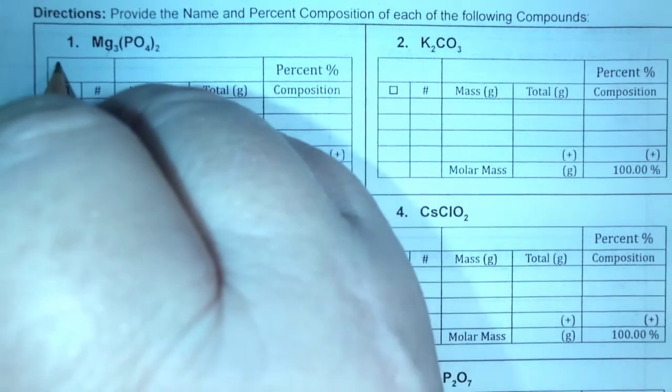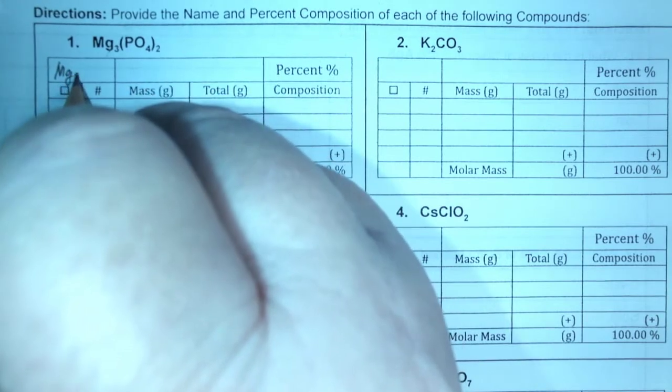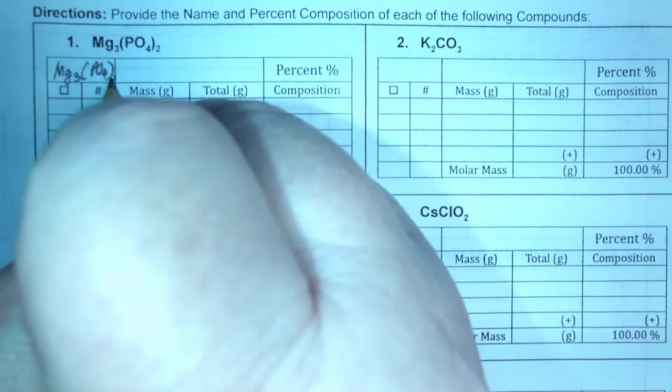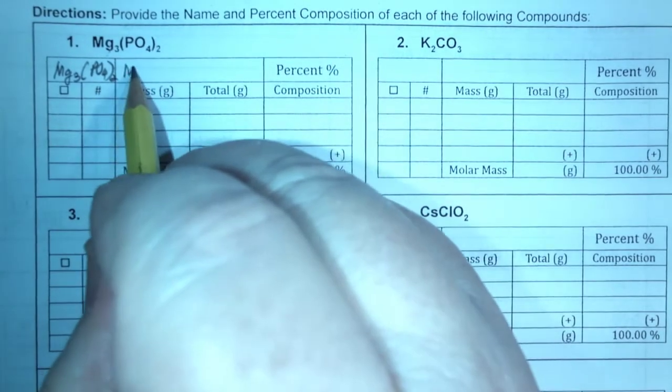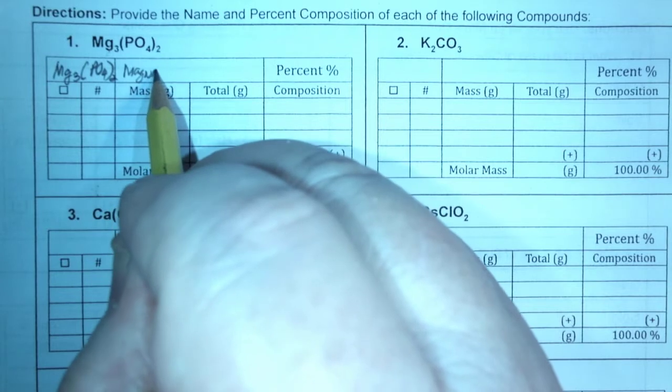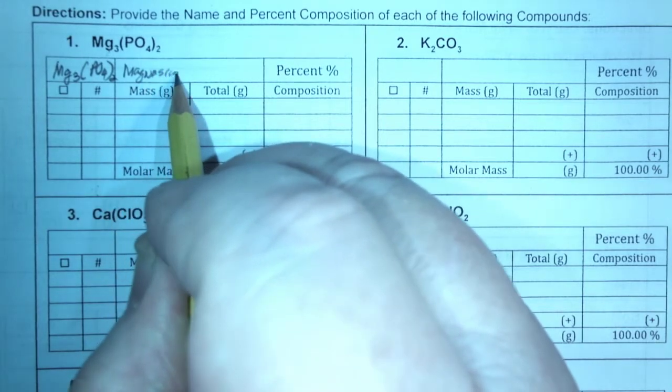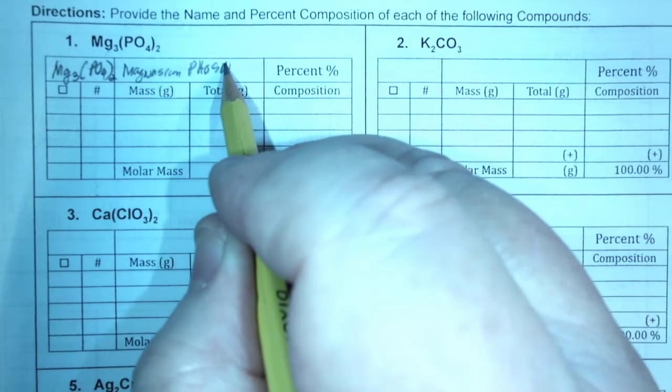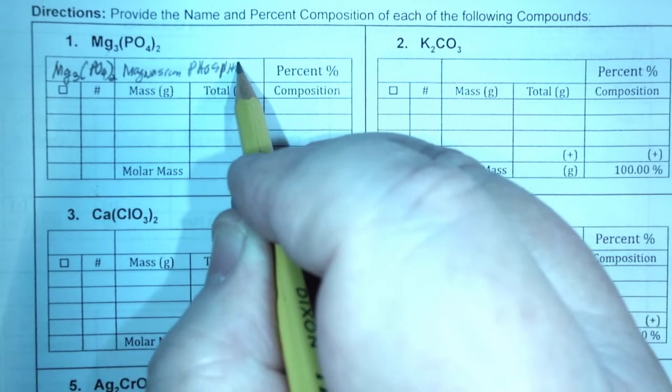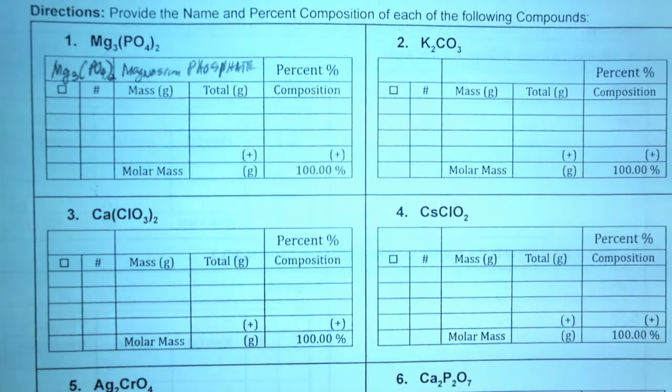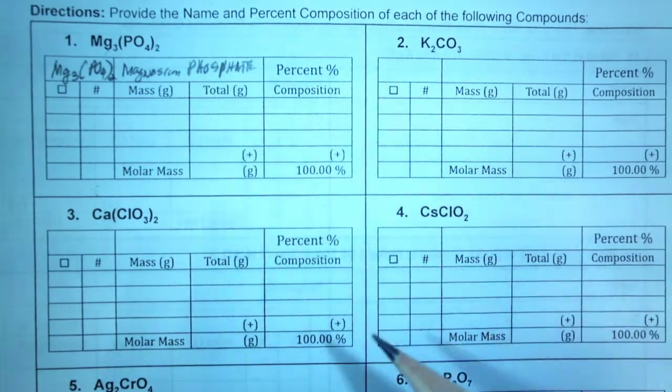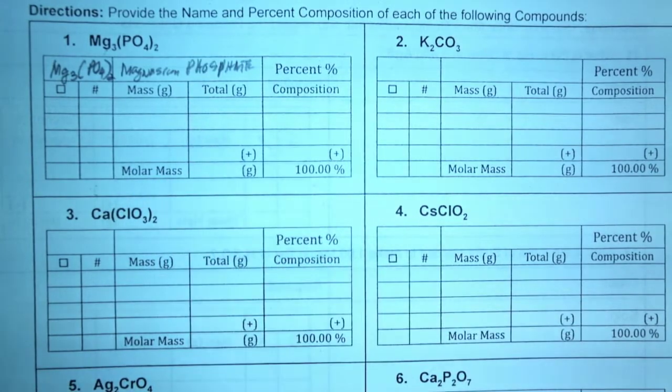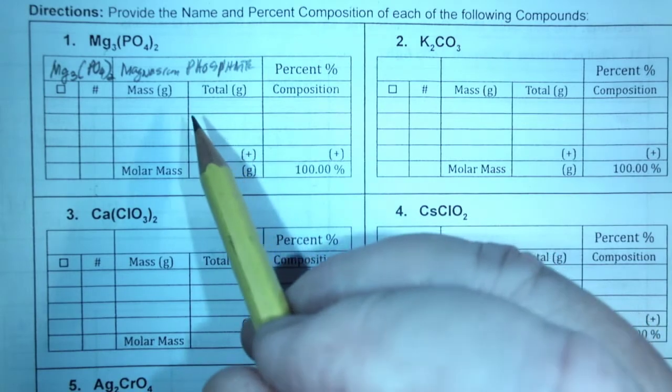Okay, so again, magnesium three, parenthesis, PO4, two. And this is magnesium phosphate. And again, it's good to practice the names so that when we're done with this, you will have remembered at least the most important compounds.